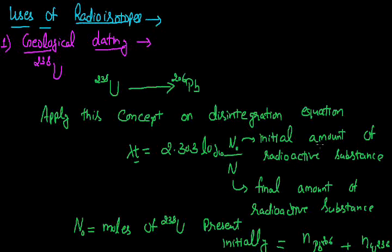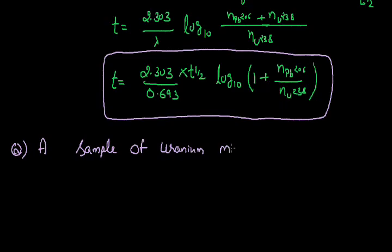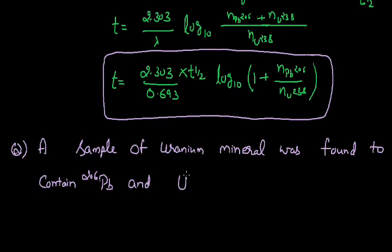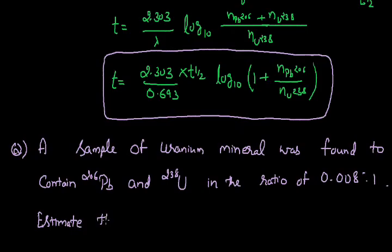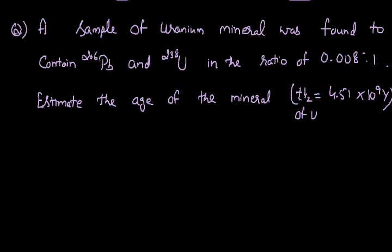That is about the age determination of rock, and this is termed as geological dating. For example, here is a question: a sample of uranium mineral was found to contain lead and uranium in the ratio of 0.008 : 1. With the help of this data, we are asked to calculate the age of the mineral.